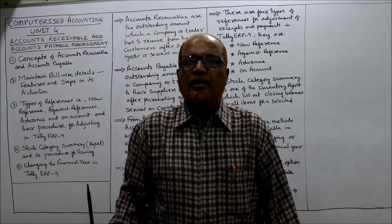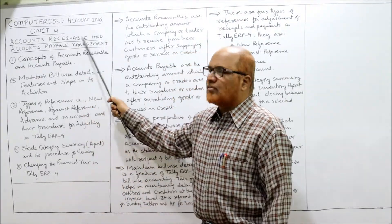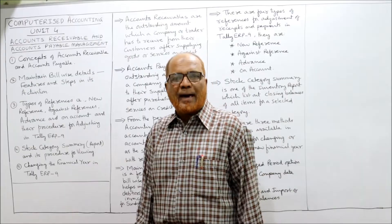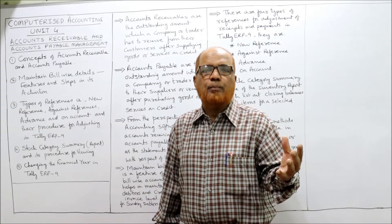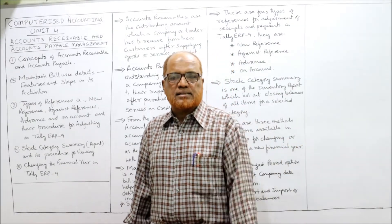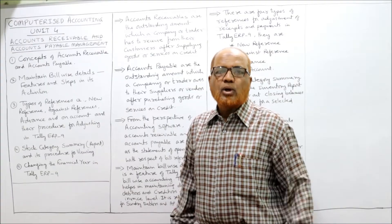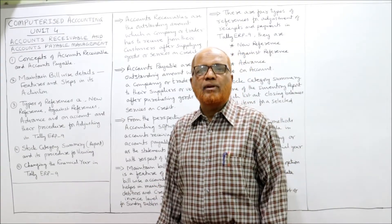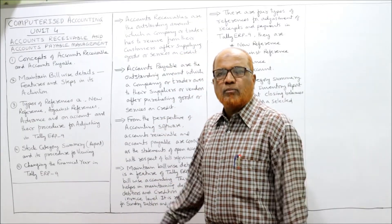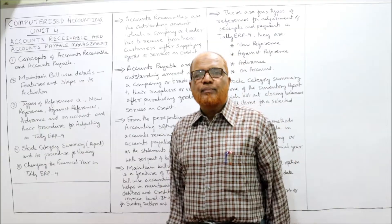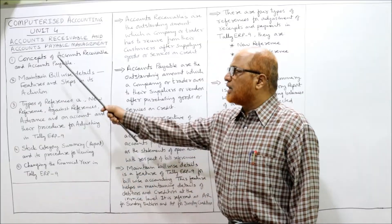Now I'm going to start unit number four. The topic of this unit is account receivable and accounts payable management. Normally every business will have account receivable and account payable. Account receivables are assets and account payables are liabilities. I'm going to explain how these are recorded in Tally ERP 9. There are five topics of discussion in this unit.